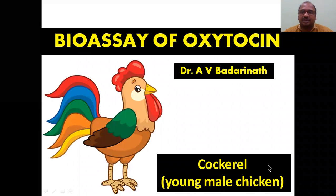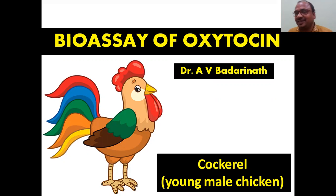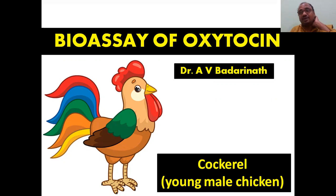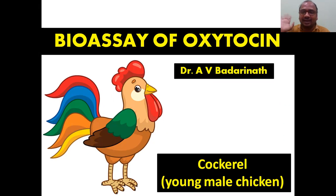Hi students, this is Dr. Badrinath. In this video we will see the bioassay of oxytocin. For the bioassay of oxytocin, we are using one animal — a very important method — the cockerel. A cockerel is a young male chicken. These are the two important characters: young and male. Don't use a female here.